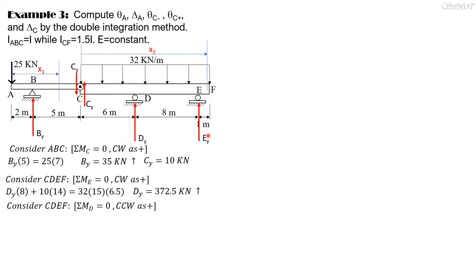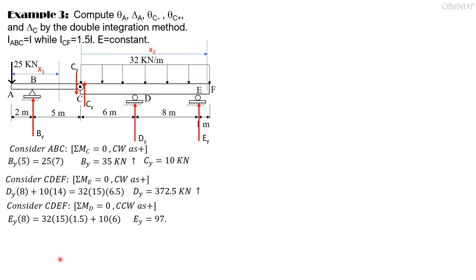Taking summation of moments about point B equals zero to solve for Ey, counterclockwise as positive: Ey times 8 equals 32 times 15 times 1.5 plus 10 times 1.5 plus 10 times 6. Solving for Ey: Ey equals 97.5 kN upward. Now that all reactions are computed, let's set up the differential equations.